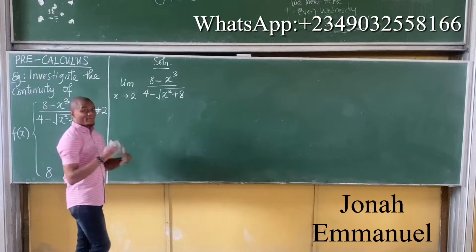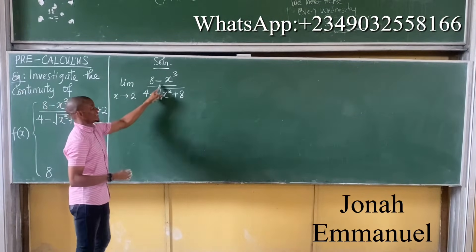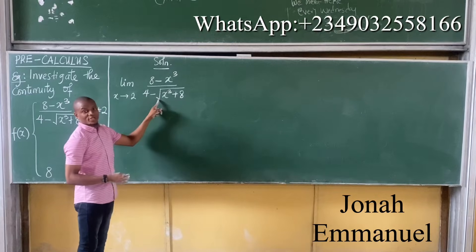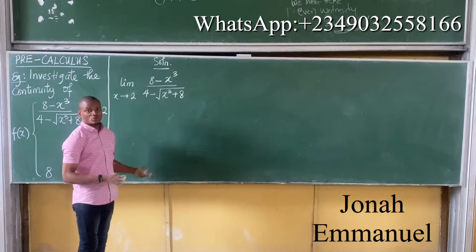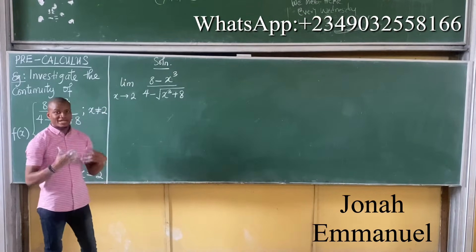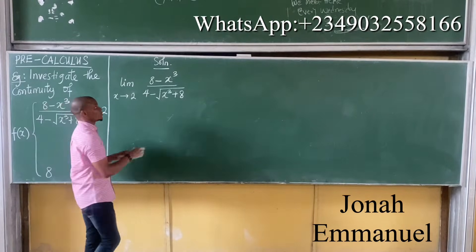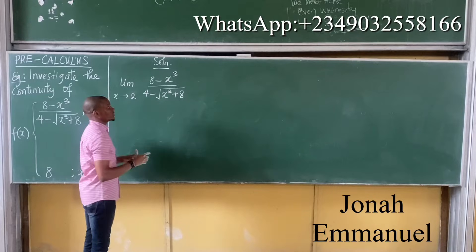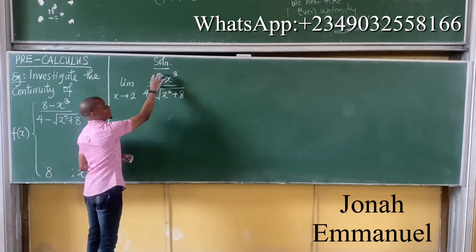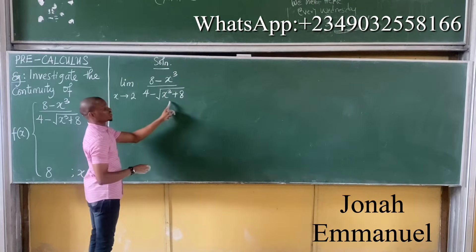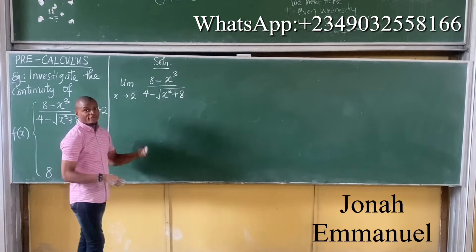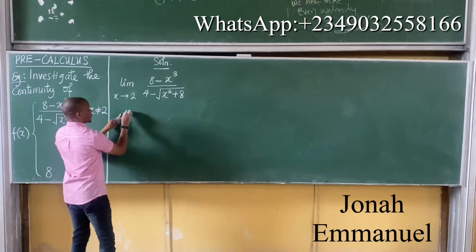So unlike our previous example, for this one we can see that this function, or the denominator, involves a square root. So hence, we have to use the concept of rationalization. We said to rationalize any surd, simply multiply numerator and denominator by the conjugate of the denominator, as we discussed in our previous class.